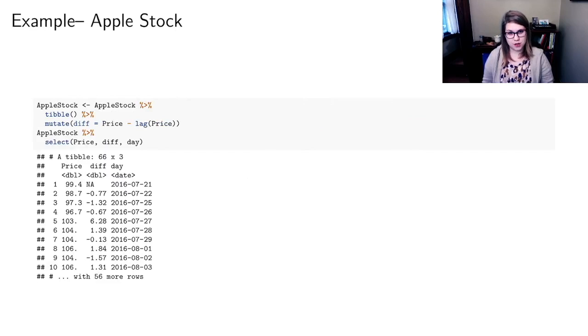Let's look at this Apple stock data. I have taken the price which is the price of the stock every day. On the 21st of July the price was $99.40, on the 22nd it was $98.07. And then I can make a difference where I take the price minus a lagged version of the price.